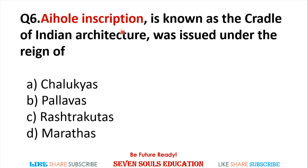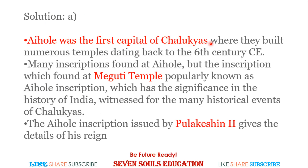Sixth question: The Aihole inscription is known as the 'cradle of Indian architecture.' It was issued under the reign of which ruler? Aihole was the first capital of the Chalukyas, where there were many temples in the 6th century. Among the many inscriptions found at Aihole, the most notable inscription was found at the Meguti temple. The Aihole inscription was issued by Pulakeshin II.